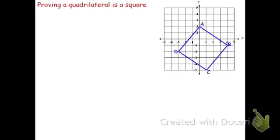In this video, we'll review how to prove if a quadrilateral is a square. Now of the four — a rhombus, a rectangle, a parallelogram, and a square — this is probably the most difficult.